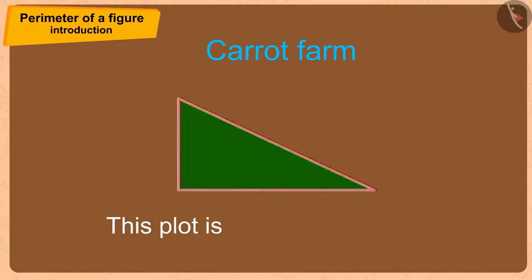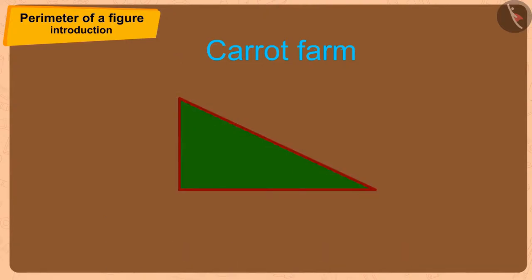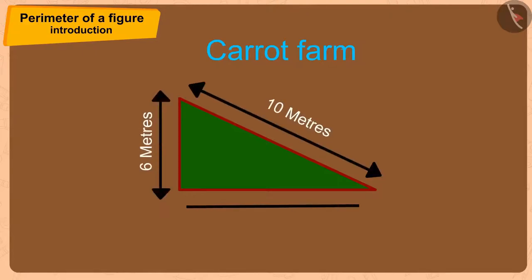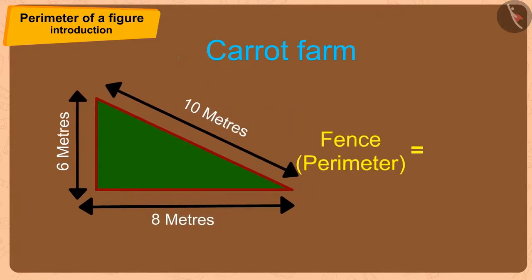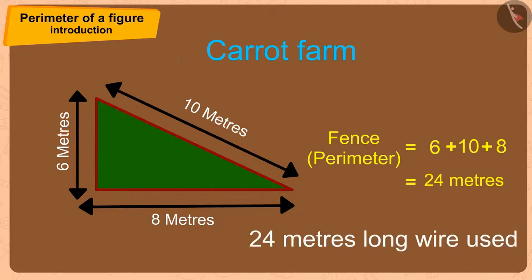This plot is triangular-shaped. Therefore, to find the perimeter of its fence, we only have to add the length of its edges. In this way, to fence this plot, Bhola needs to add the sides 6, 10, and 8. Therefore, he needs a 24 meter long wire.